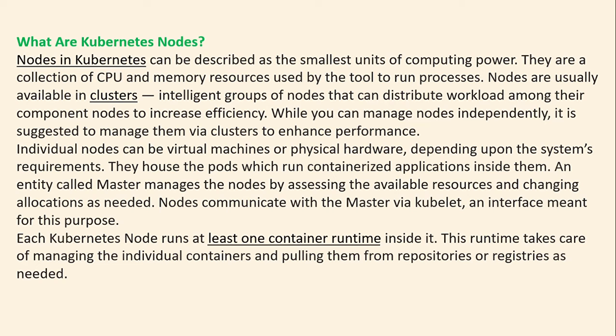Nodes in Kubernetes can be described as the smallest unit of computing power. They are a collection of CPU and memory resources used by the tool to run processes. Nodes are available in clusters — groups of nodes that can distribute workloads among their component nodes to increase efficiency. While you can manage nodes independently, it is suggested to manage them via clusters to enhance performance. Individual nodes can be virtual machines or physical hardware depending upon the system requirements.